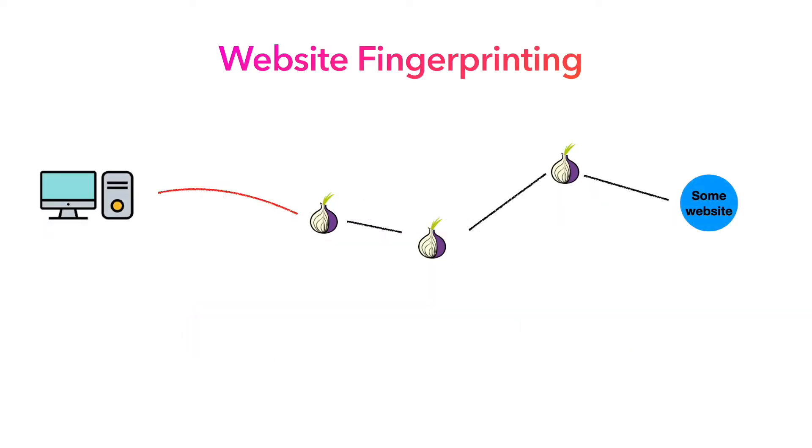More and more people have been turning to privacy-enhancing communication tools like Tor to access the internet. However, a local eavesdropper can launch a traffic analysis attack known as website fingerprinting to de-anonymize the user.